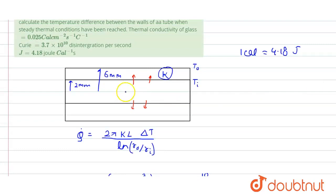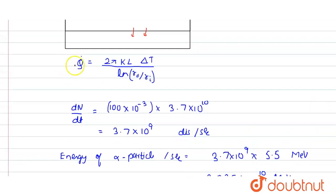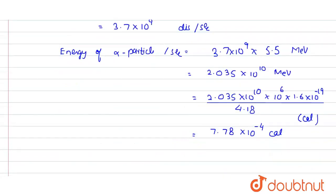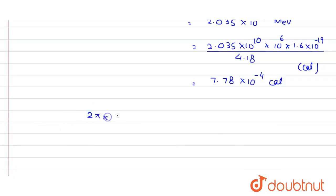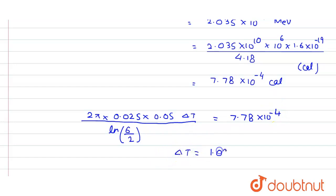This energy per second is equated to the heat transfer formula: 2π × k(0.025) × L(0.05) × ΔT divided by ln(6/2) = 7.78 × 10⁻⁴ calories per second. Solving for ΔT gives a temperature difference of 1.09°C between the inner and outer walls of the tube at steady state.